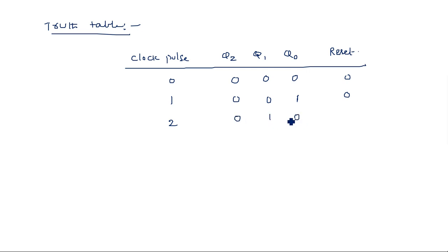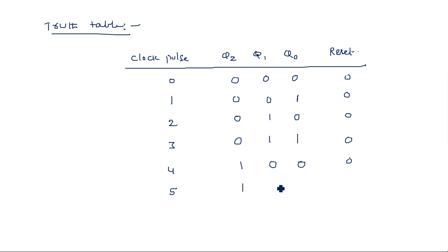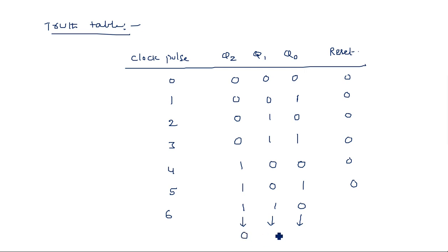On the second clock pulse, the count is incremented by 1. This continues for the third, fourth, and fifth clock pulses — the reset pin remains 0 throughout. When the fifth clock pulse occurs the count is 1, 0, 1. When the sixth clock pulse occurs, the count would go to 1, 1, 0 — but when this 1, 1, 0 occurs, automatically the count resets to 0s and the reset pin becomes 1.